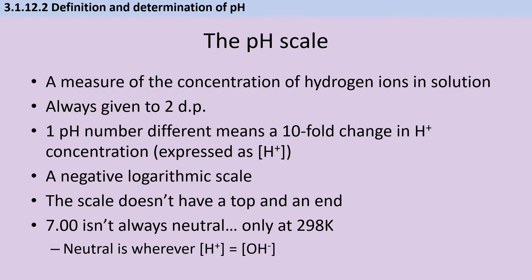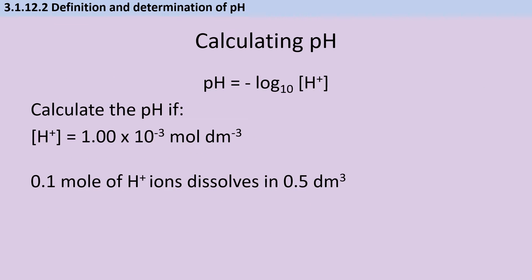We should also be aware that the scale doesn't have a top or bottom end. pH 7 doesn't necessarily mean neutral — it does at 298 Kelvin, but at other temperatures the pH of neutral will actually be a slightly different number. The neutral point is always wherever the number of hydrogen ions is equal to the number of hydroxide ions. In almost every question in the acids and bases topic you'll be asked to calculate pH from hydrogen ion concentration, which we do using this formula.